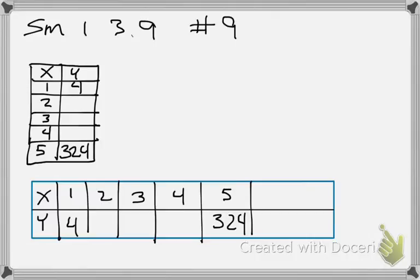They told us in the directions what type of sequence it is. So we know it's a geometric, right? So on this problem, there's two different ways of doing it, right?